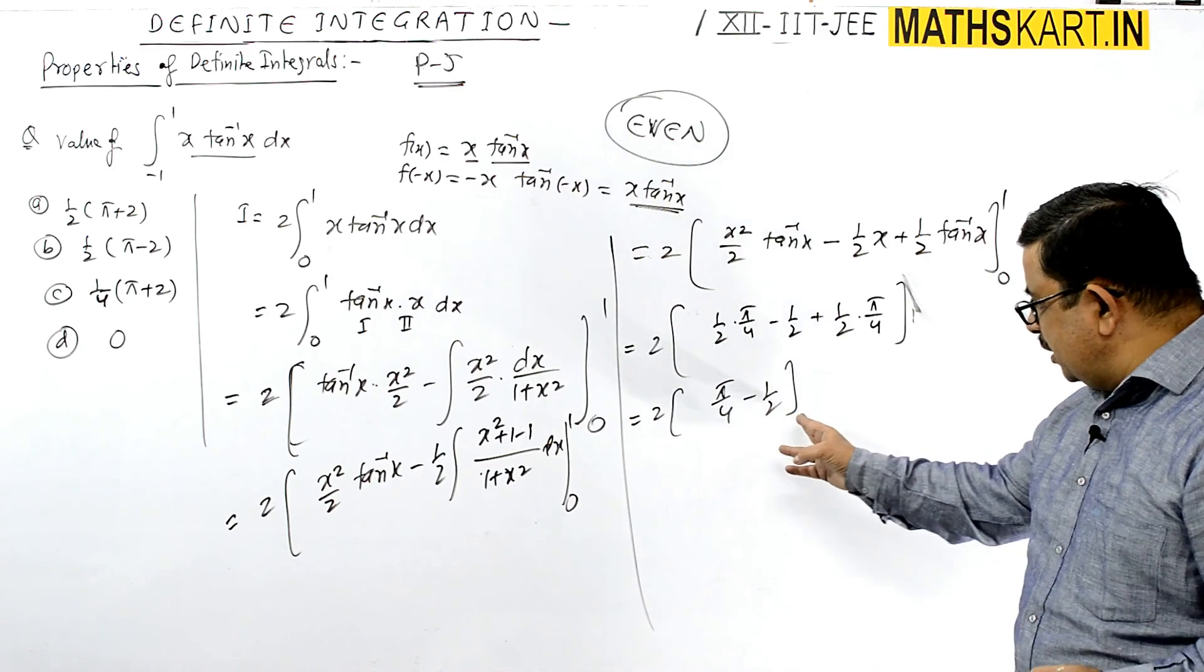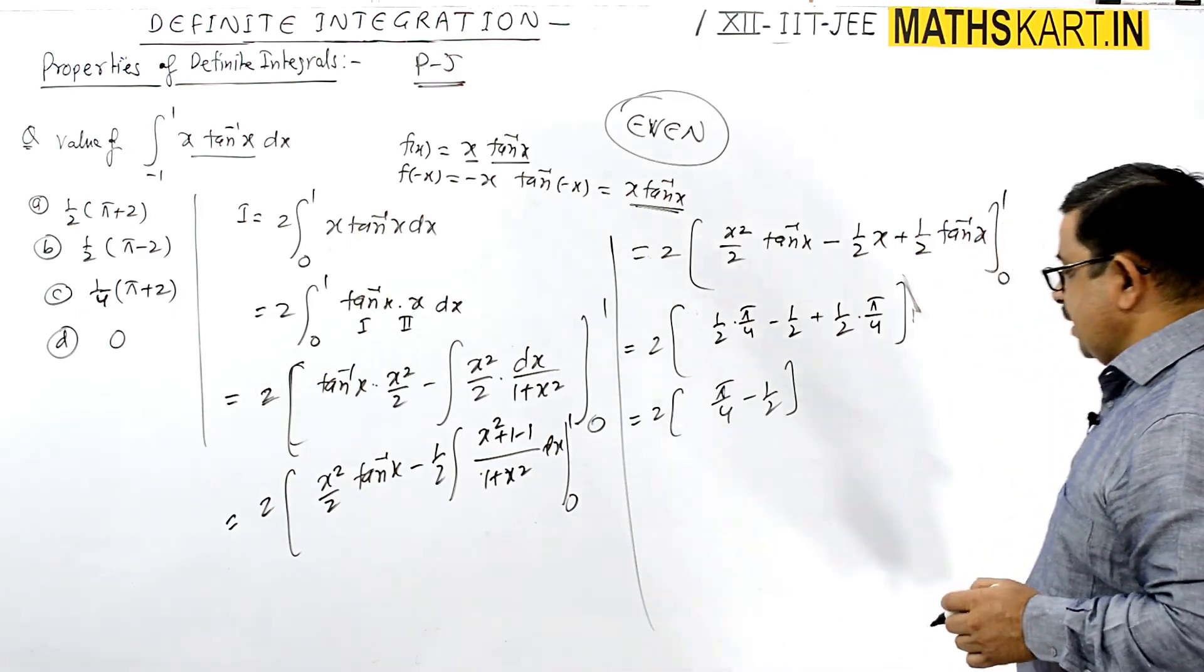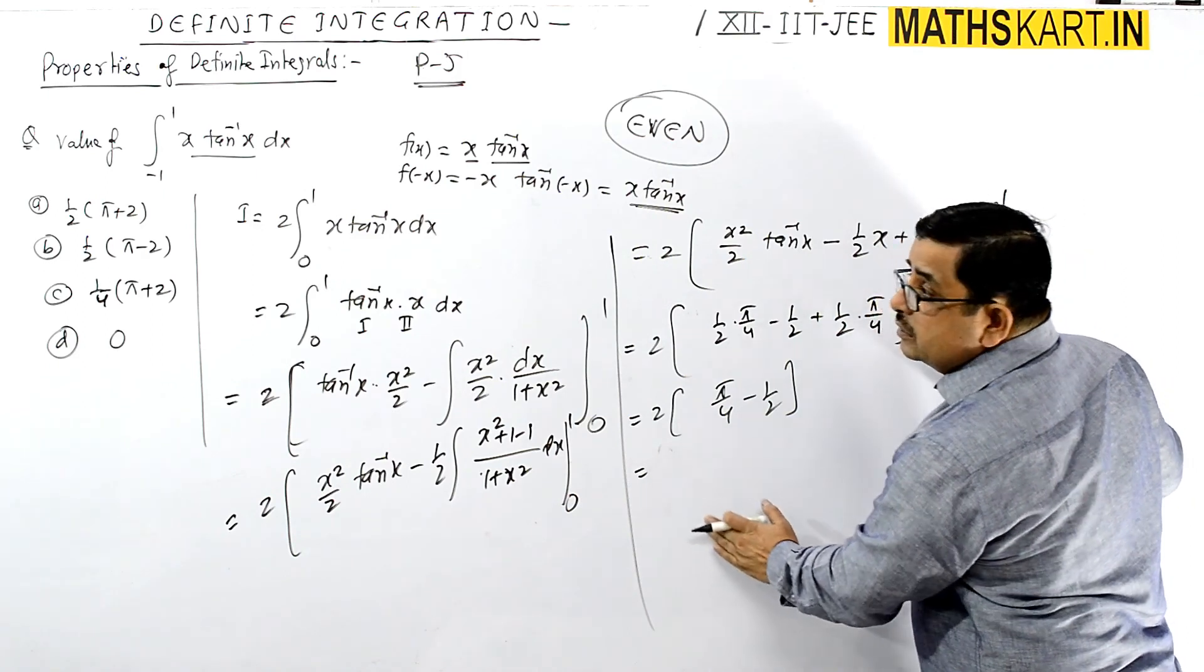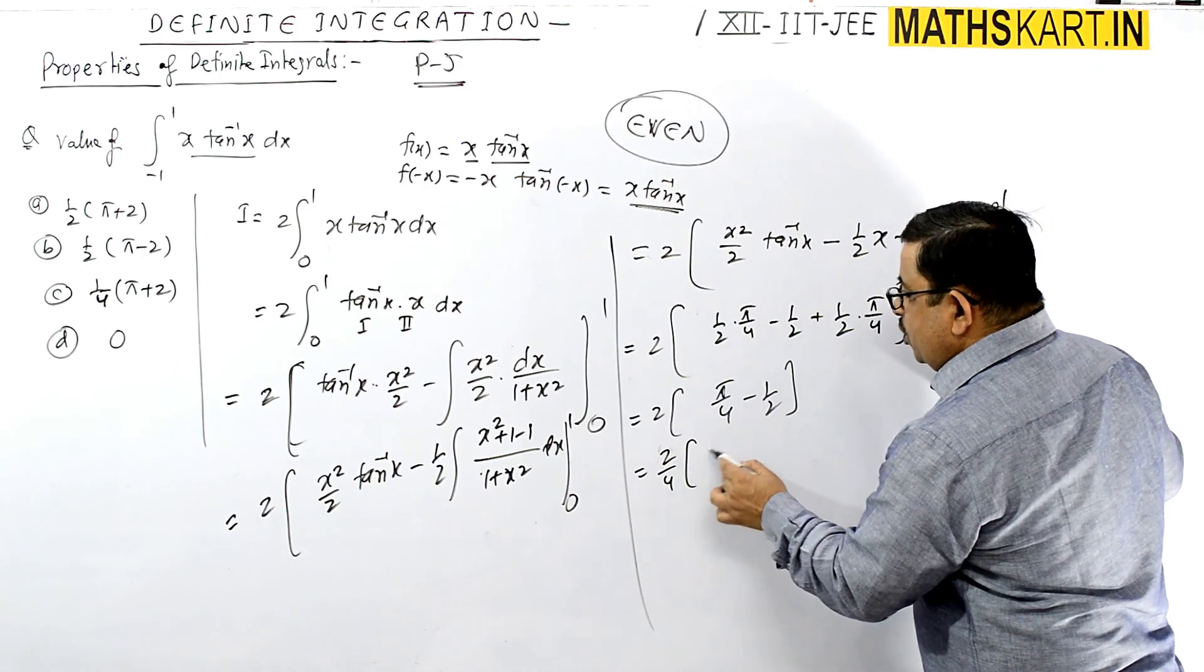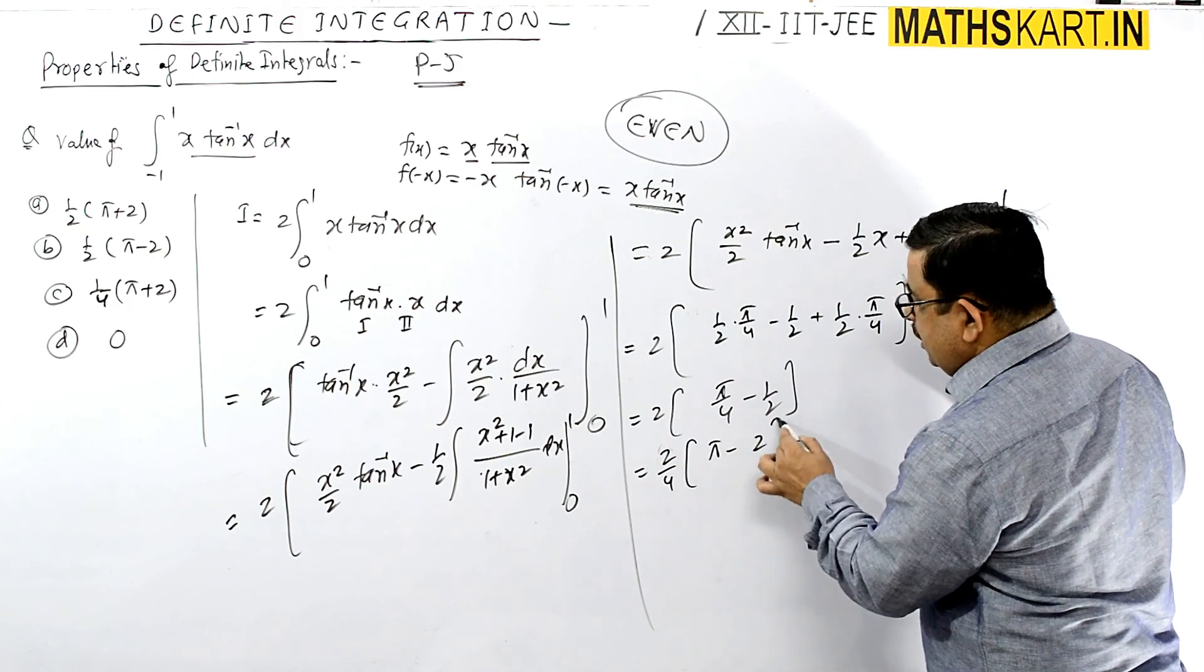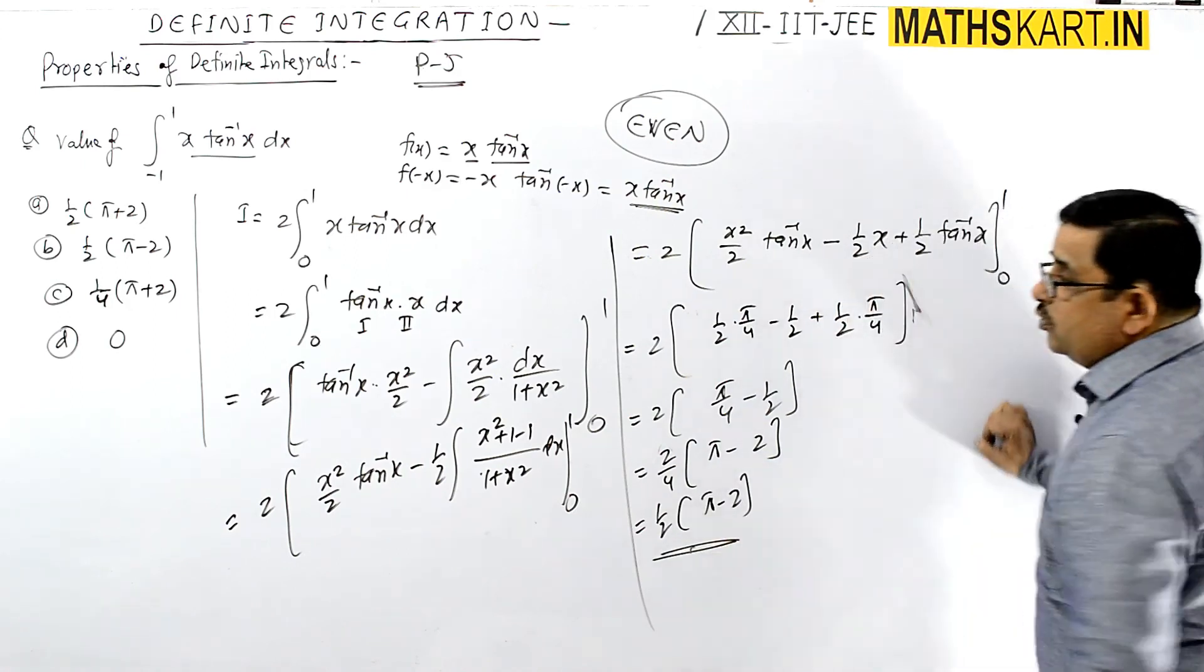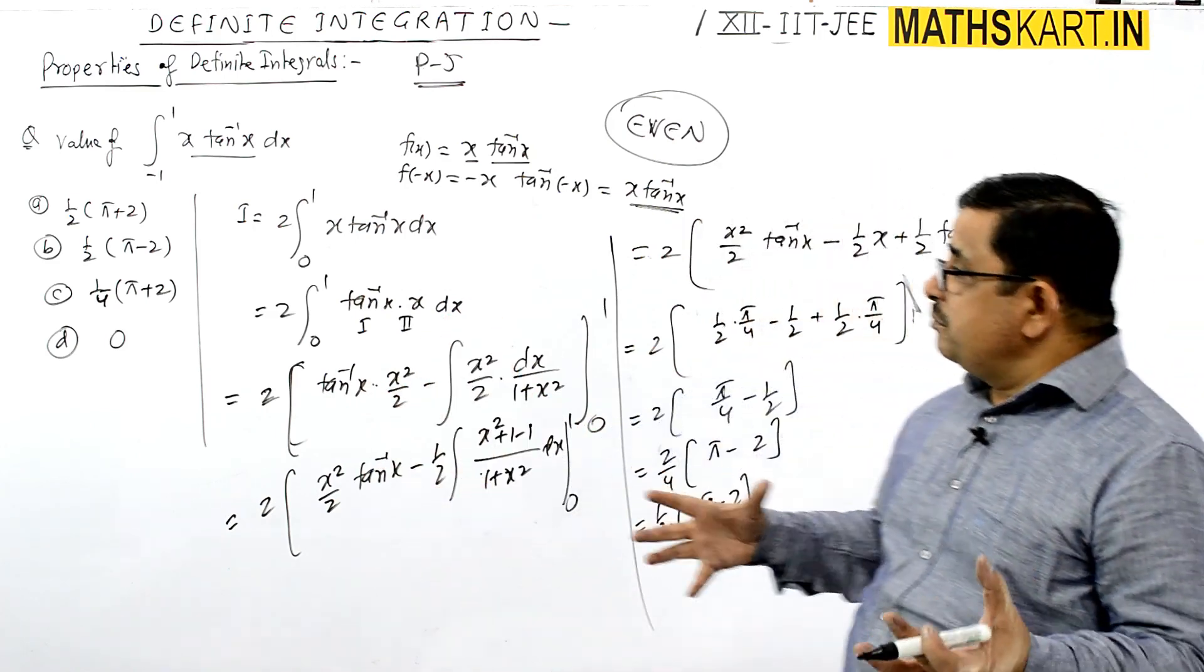Taking out the factor of 2, we get 2(π/4 - 1/2) = 2/4(π - 2). If you take 4 common, it's (π-4)/4, which can be written as 1/2(π-2). The correct option is B. This is how we work it out.